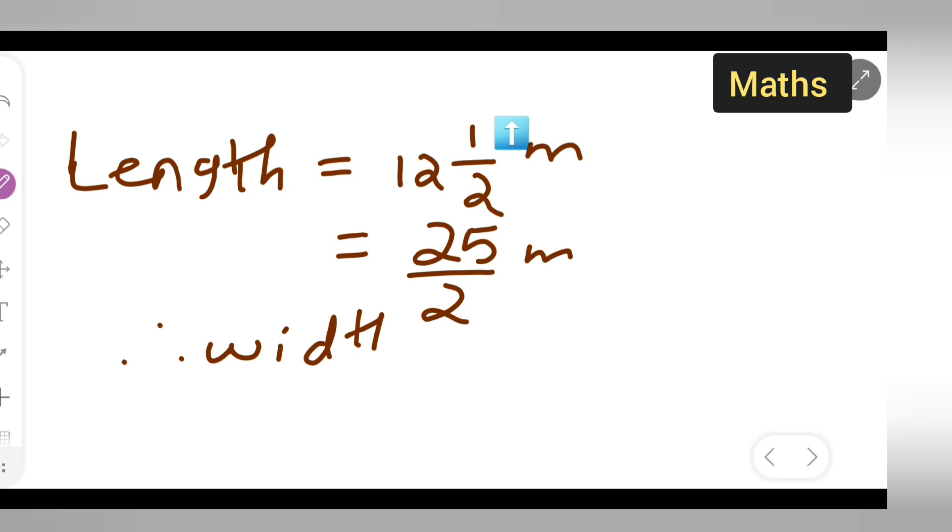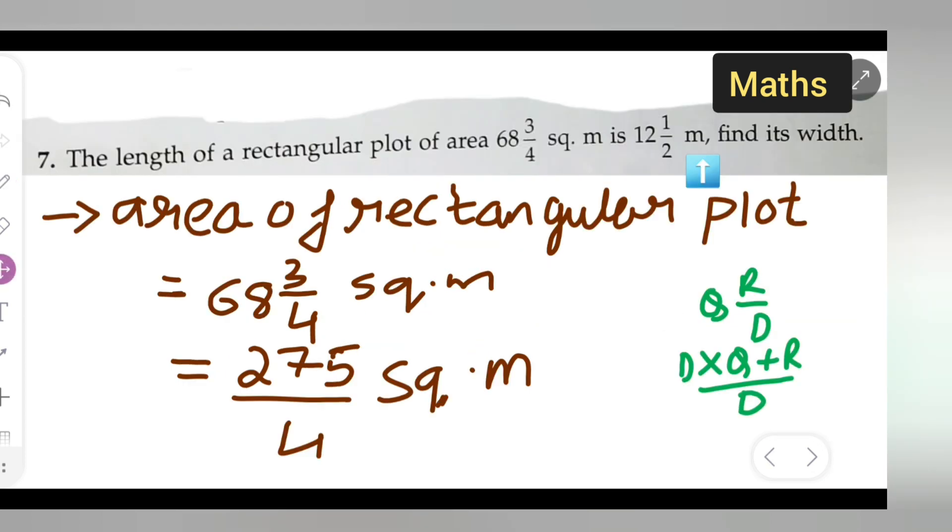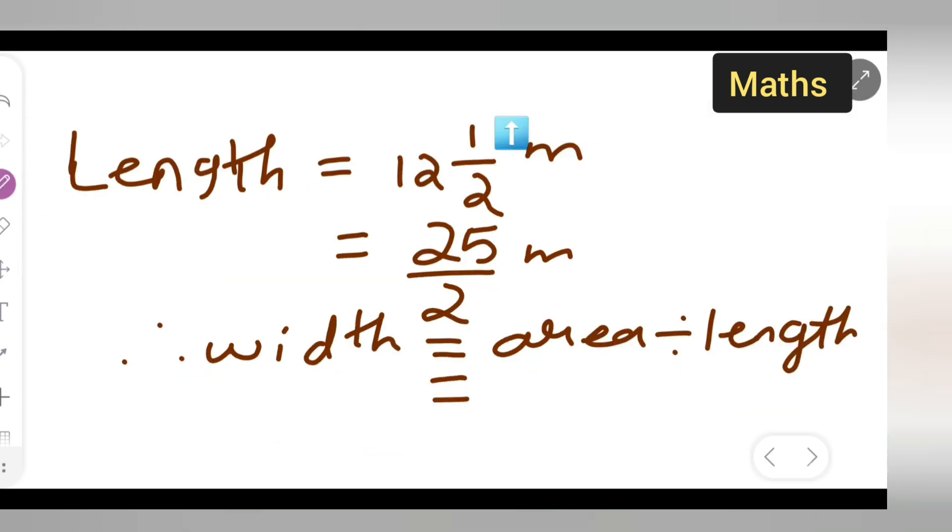Width is equal to area divided by length. The area is 275 over 4, and we divide by the length which is 25 over 2. So width equals 275 over 4 divided by 25 over 2.